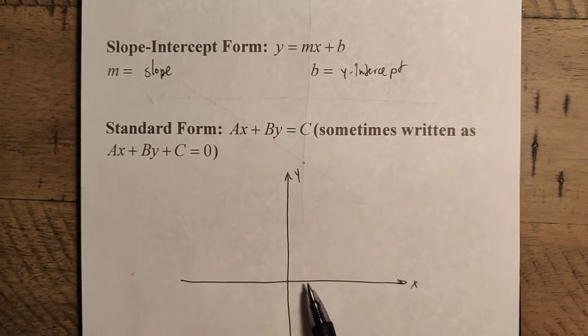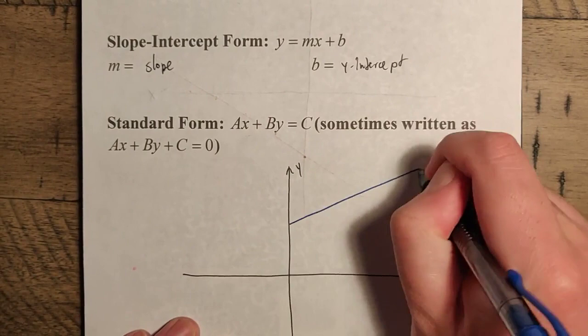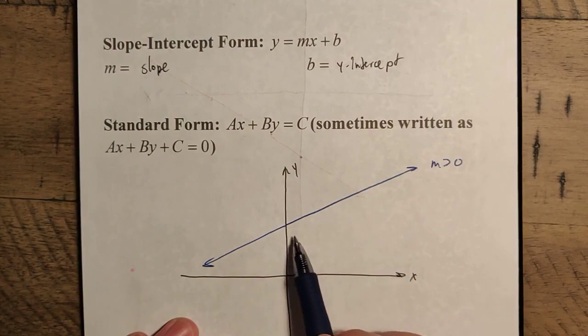Which means, if we take both positive, for instance, delta y, the rise is positive and the run is positive. Positive rise means we're going to go up on the y axis. Positive run means we're going to go right on the x axis. So our line is going to look something like this. We're going to have, for instance, something that looks like this, where you have a positive slope like this. Here, M is greater than zero. We can see that the line increases as we go left to right.